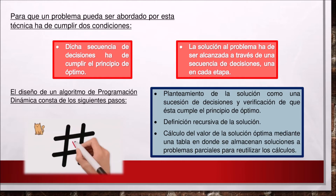Para que un problema pueda ser abordado por esta técnica ha de cumplir dos condiciones. La primera: dicha secuencia de decisiones ha de cumplir el principio óptimo. Y la segunda: la solución al problema ha de ser alcanzada a través de una secuencia de decisiones, una en cada etapa. El diseño de un algoritmo de programación dinámica consta de los siguientes pasos: 1) Planteamiento de la solución como una sucesión de decisiones y verificación de que éste cumpla el principio de óptimo. 2) Definición recursiva de la solución. Y 3) Cálculo del valor de la solución óptima mediante una tabla donde se almacenan soluciones a problemas parciales para realizar los cálculos.